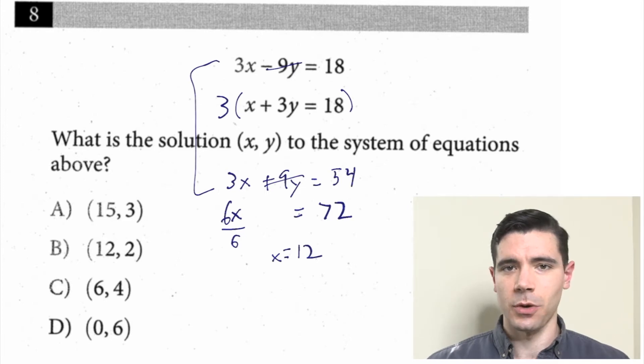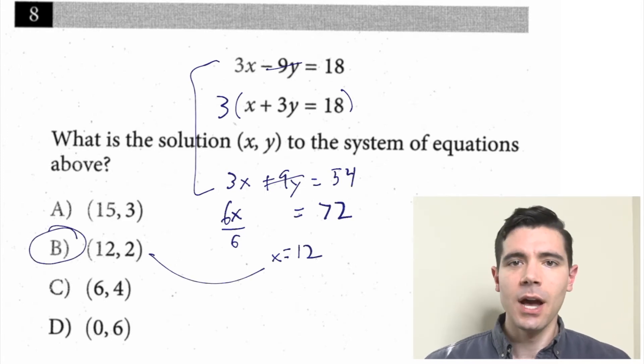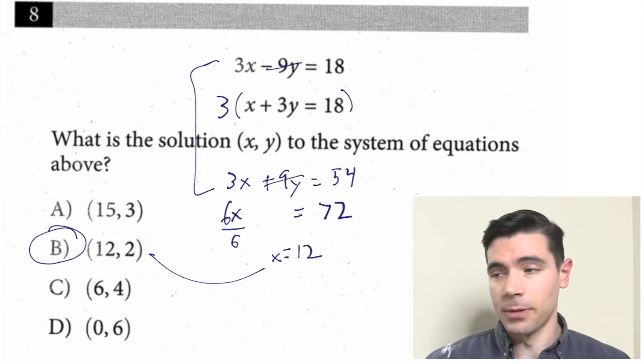Then we look at the answer choices, and there's only one option with an x value of 12. So the answer is B. We're done. I guess y is 2, but who cares?